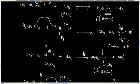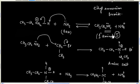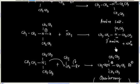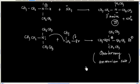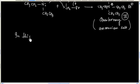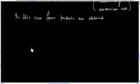So basically in this case we are getting a mixture of products. The first product is primary amine, the second product is secondary amine, the third product is tertiary amine, and finally we have quaternary ammonium salt. So we can say in this case four products are obtained. This is not a good method for the preparation of amine.